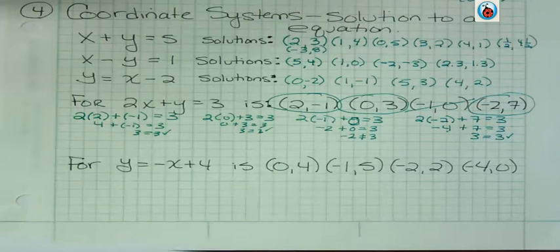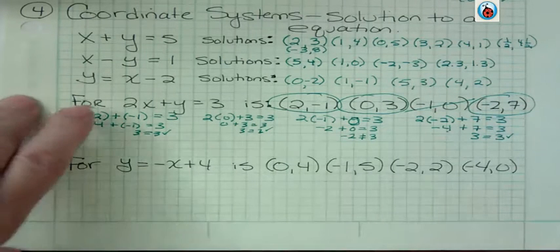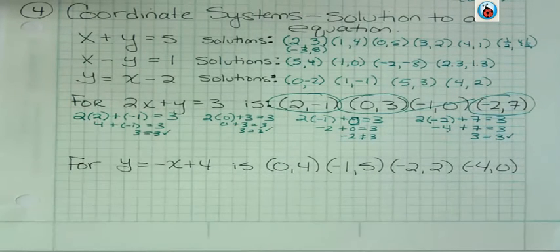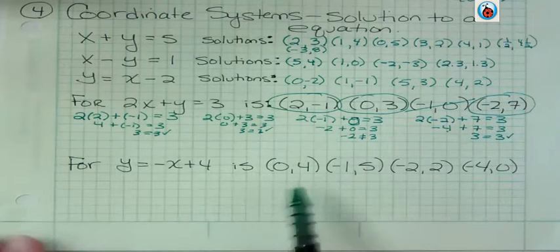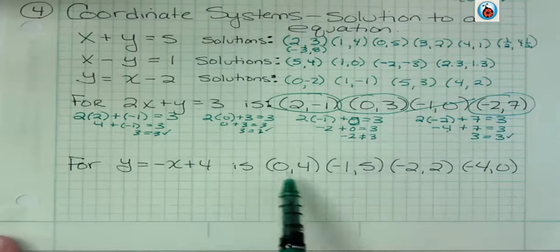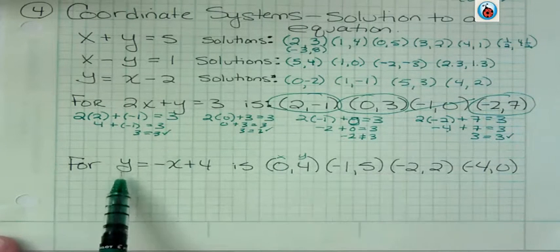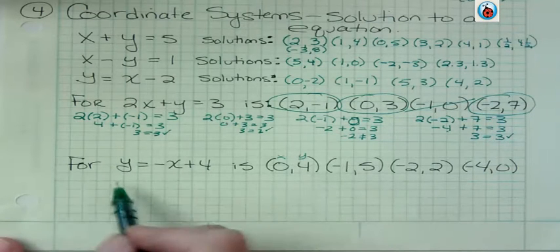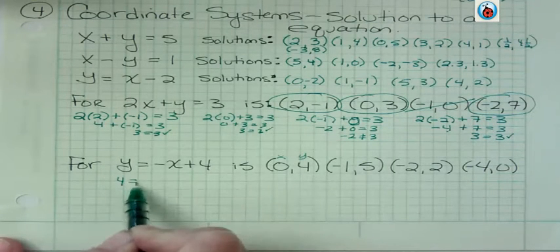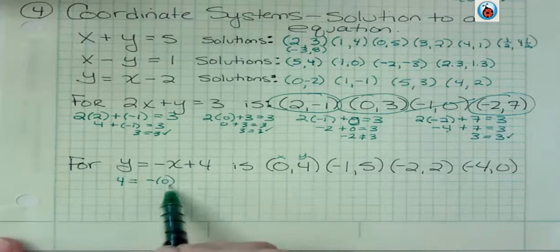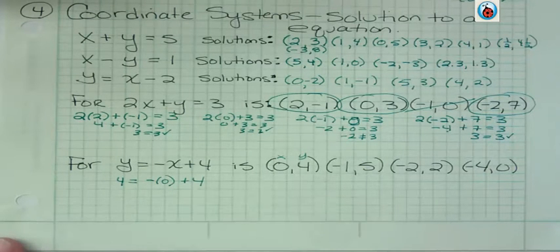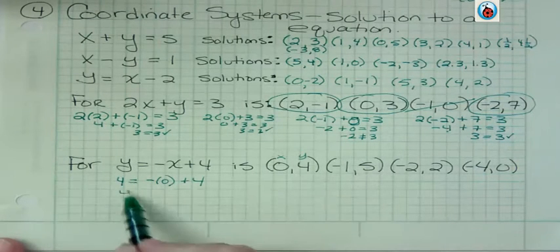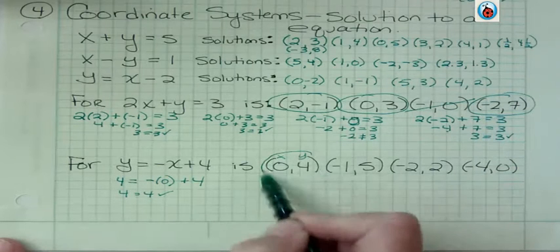So there's one more that I want you to try, and I would like you to try it by shutting off the video and then trying it and coming back and checking your work, but we're going to work it out here for those of you non-pausers. All right, so I know here that this has to be the x and this has to be the y. Even though y is listed first, I need to be careful that I put y in for y. So that's 4, and x is 0 plus 4. Well, 0 is just gone, so 4 equals 4. This is a solution.